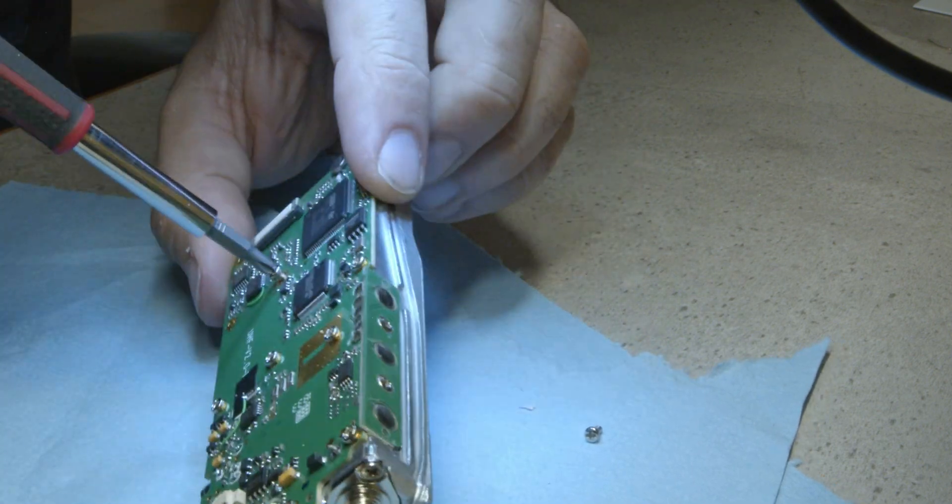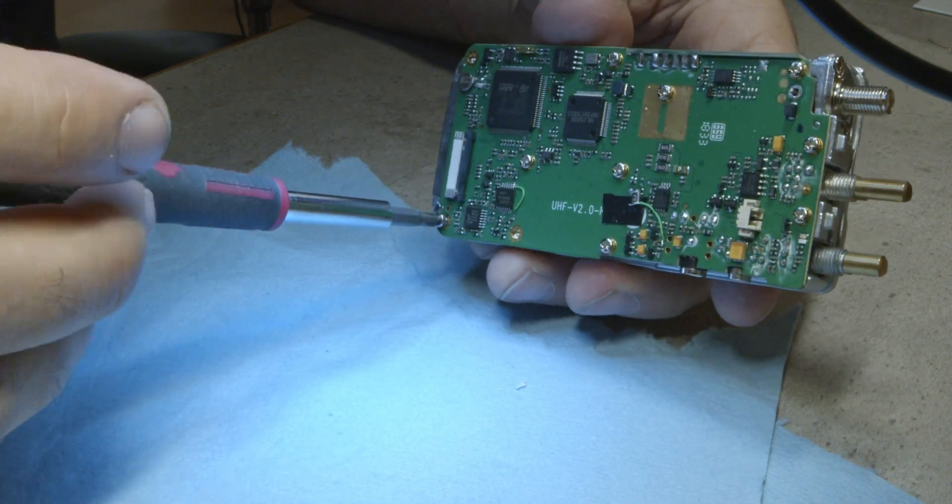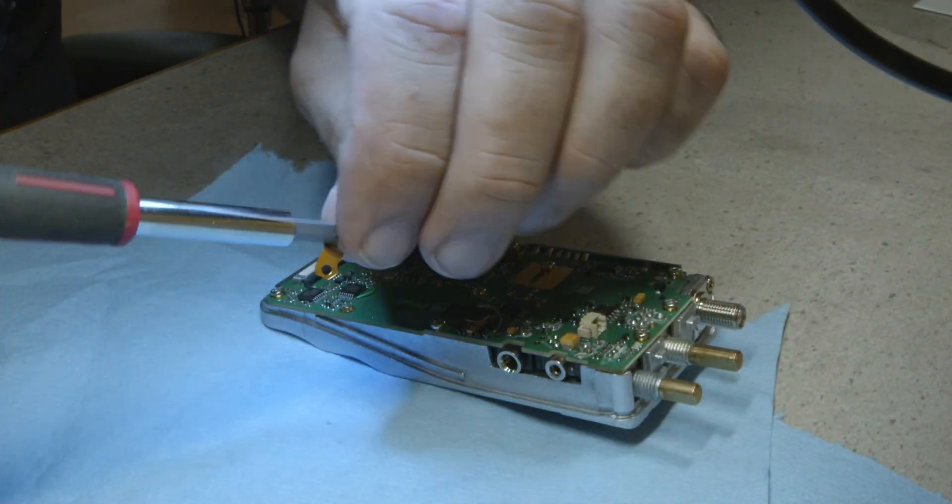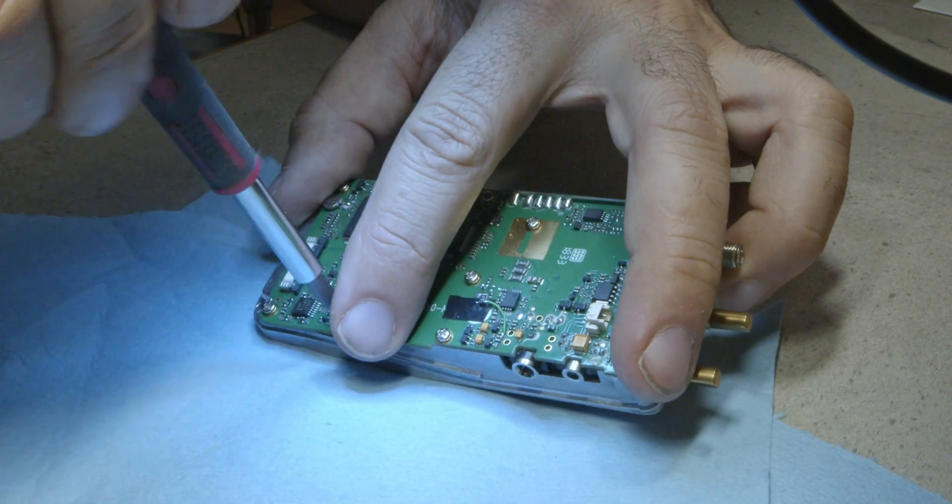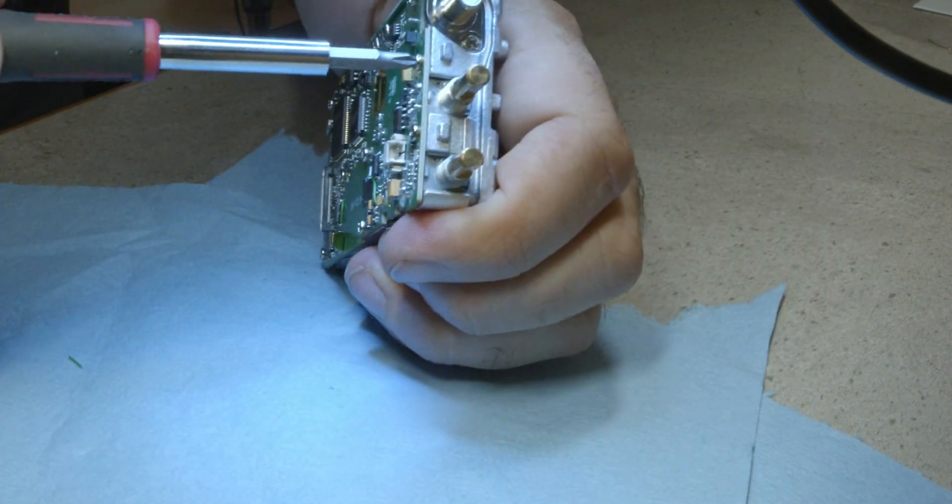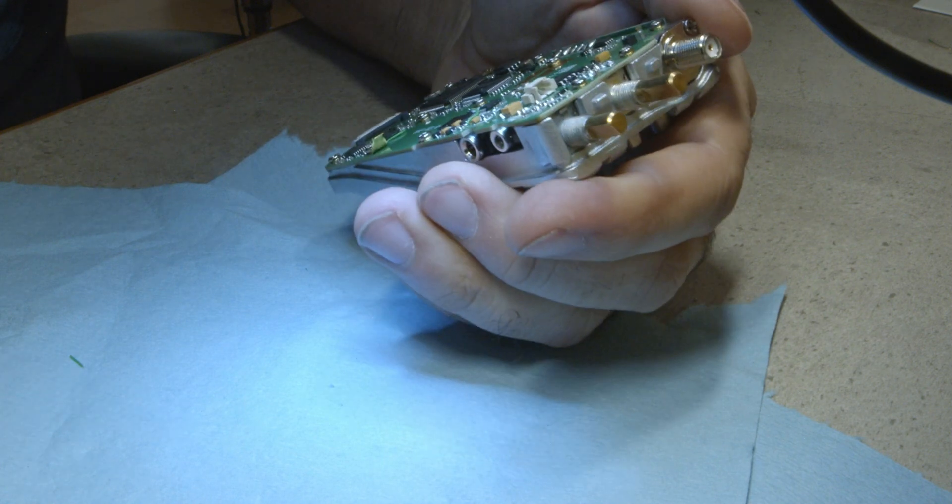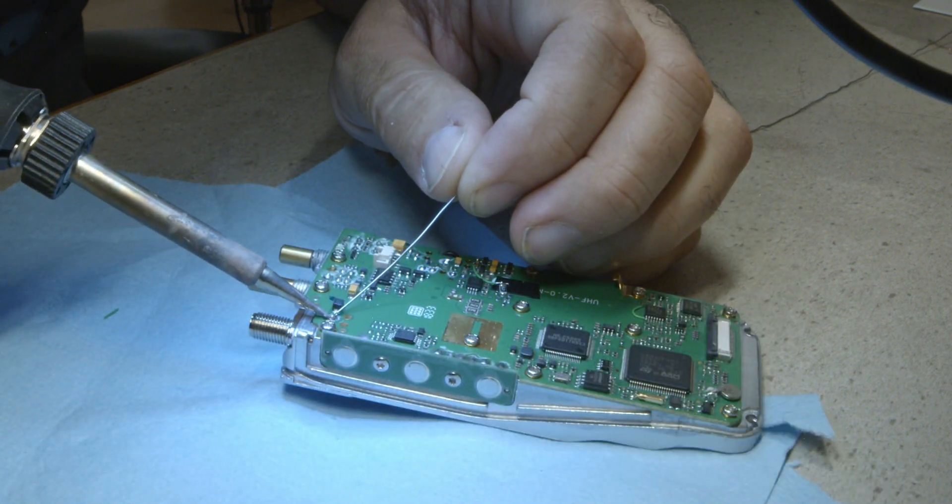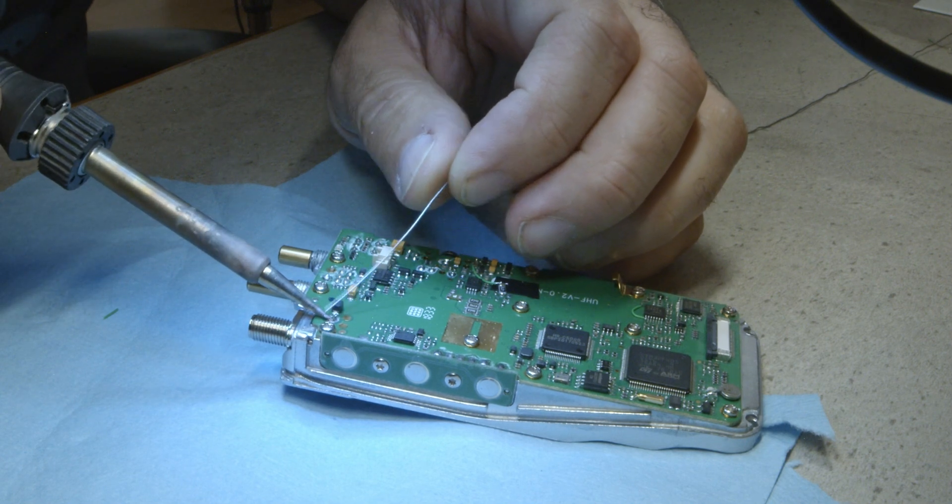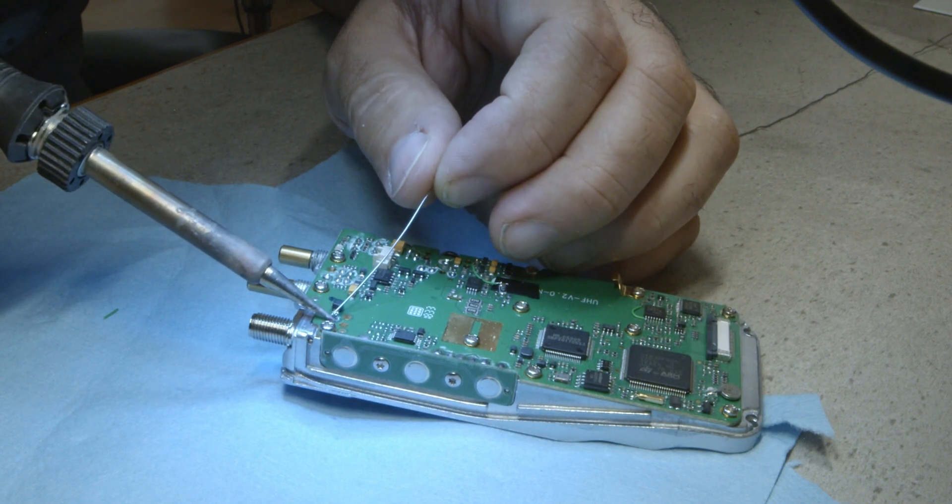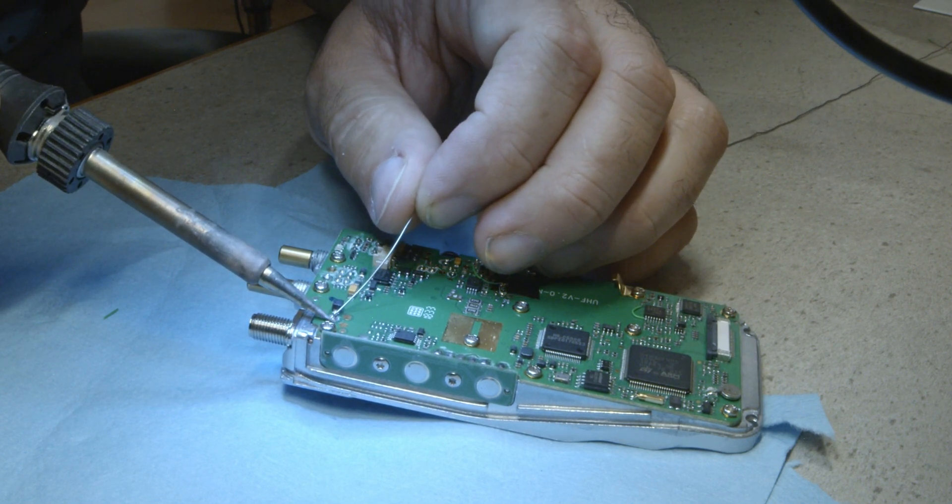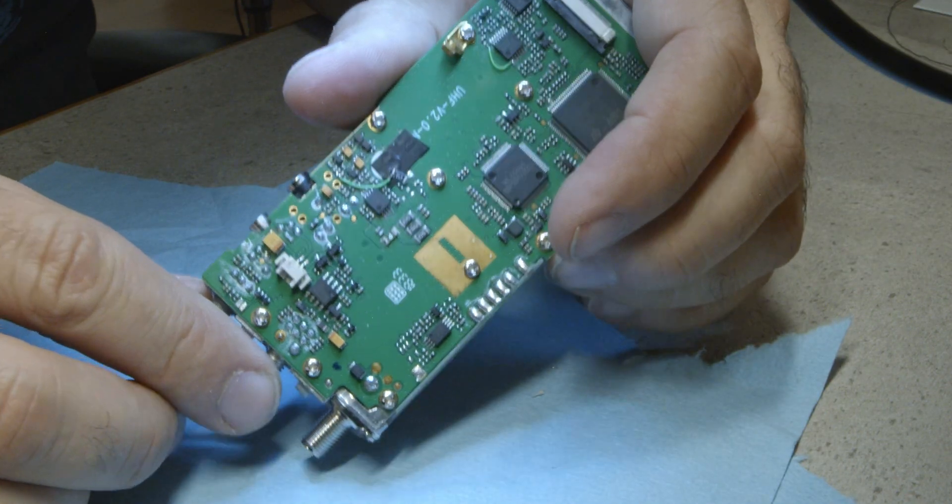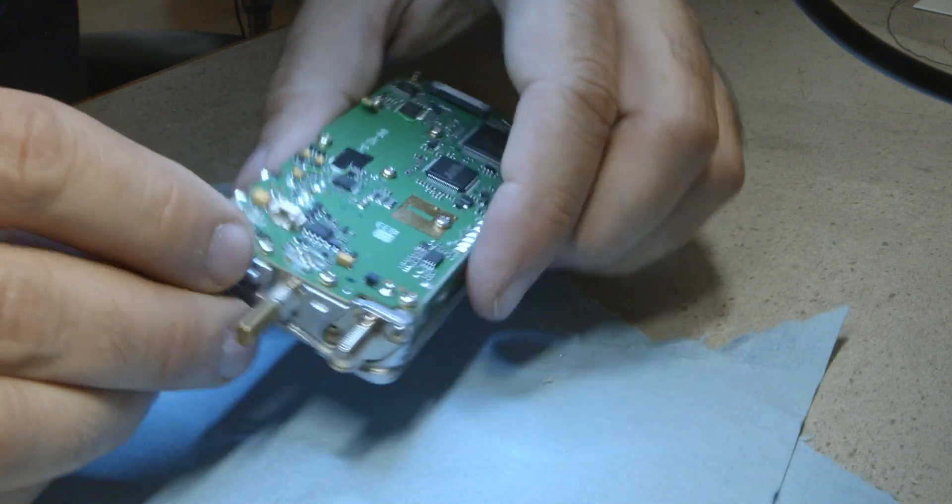When installing the screws, be sure not to cross-thread them. It's pretty easy to do. I leave all the screws loose until I get them all in and then go ahead and tighten them all up. Next, we need to solder the antenna connection again. Pretty easy. Easy to get to. A quick inspection under the microscope and we are looking good.